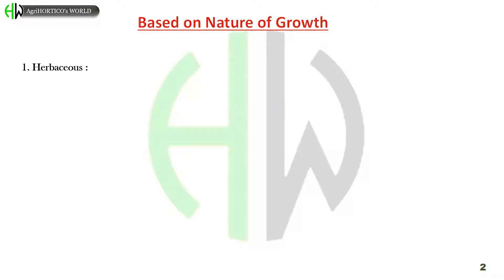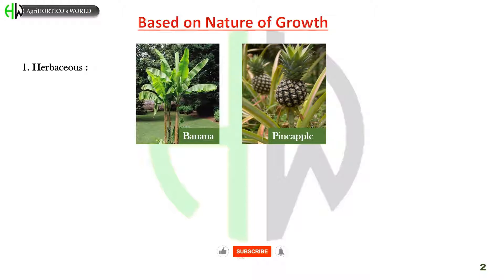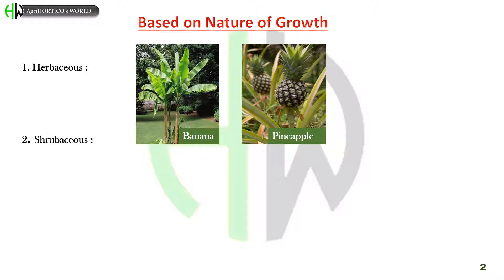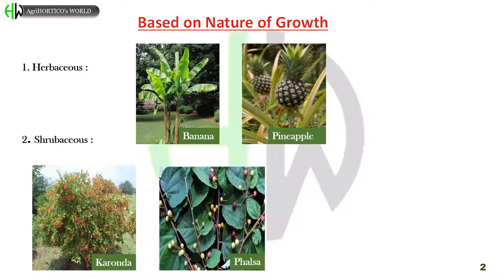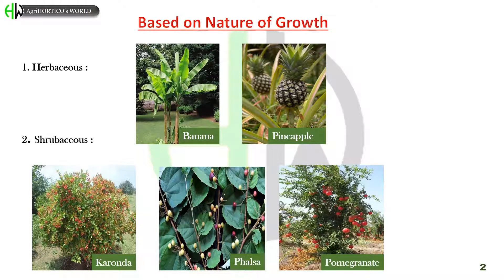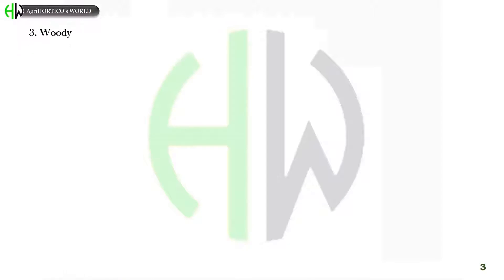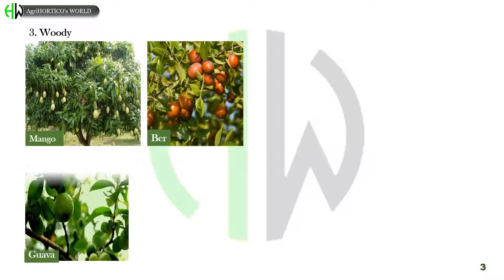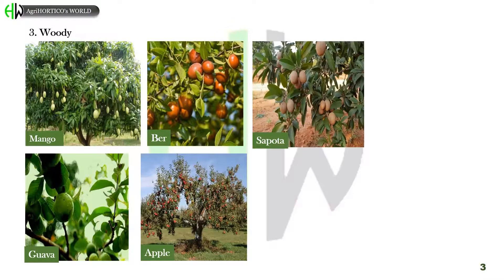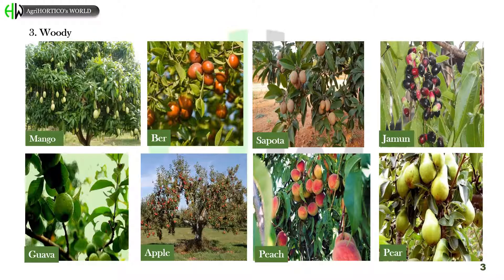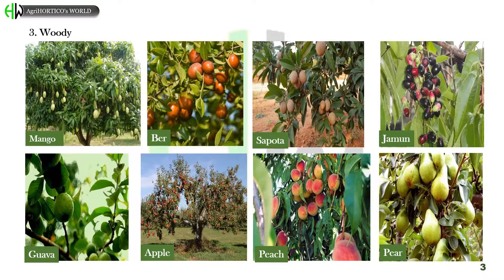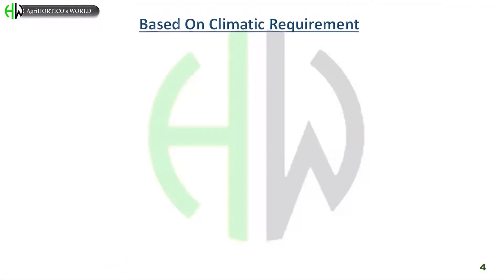Firstly, classification based on nature of growth. A herbaceous plant is a plant that does not have much wood and its stems are green and soft. These plants grow fast and produce flowers and many seeds in a short period of time. Examples are banana and pineapple. A shrubaceous plant is a woody plant smaller than a tree, usually having multiple permanent stems branching from or near the ground. Examples are karonda, falsa, and pomegranate. A woody plant is a plant that produces wood as its structural tissue and thus has a hard stem. Examples are mango, pear, guava, apple, sapota, peach, jamun, and pear.